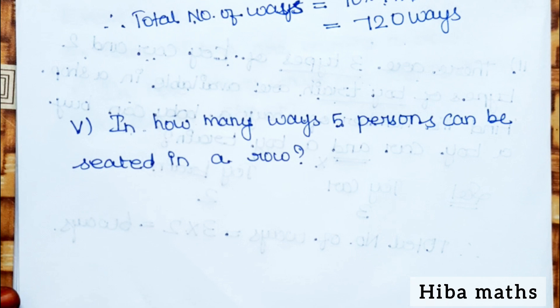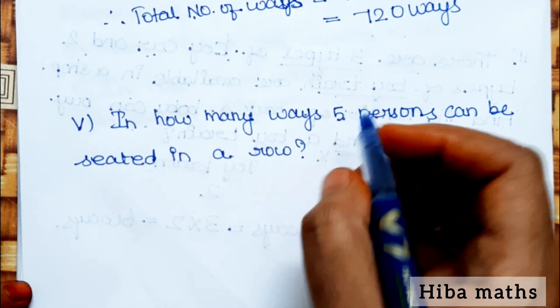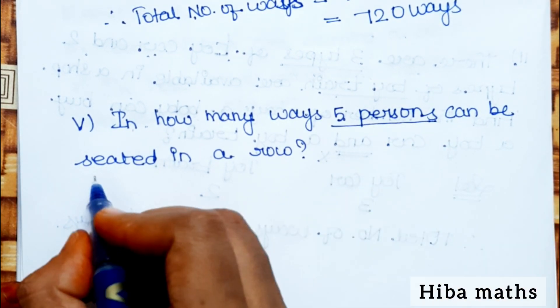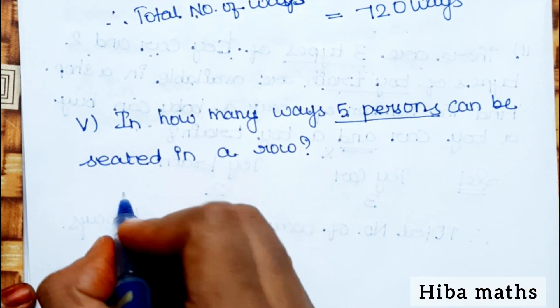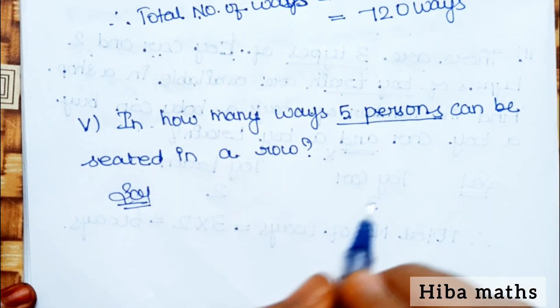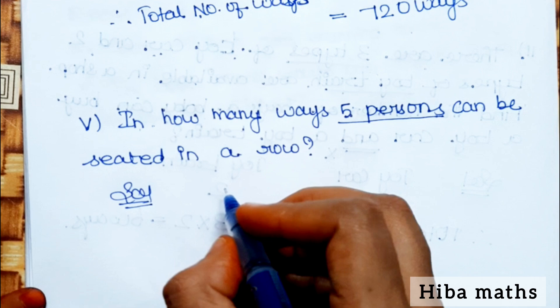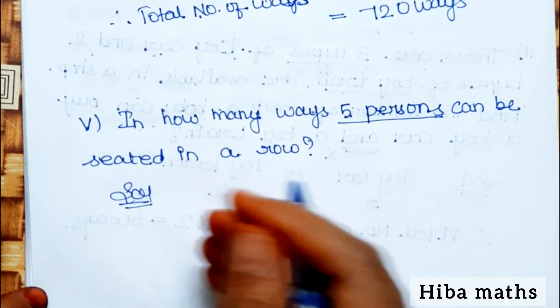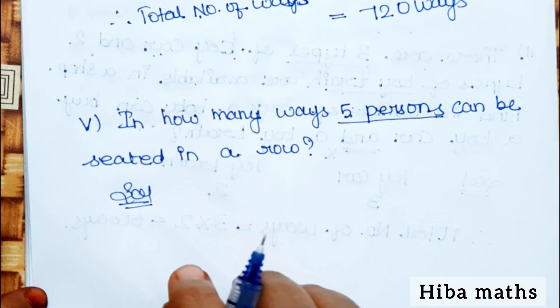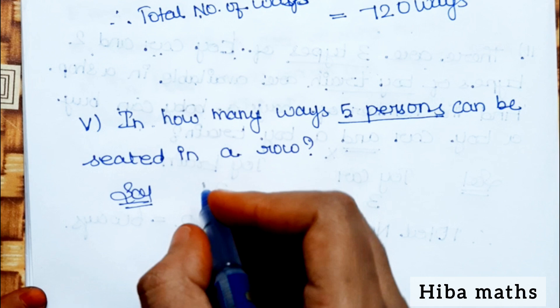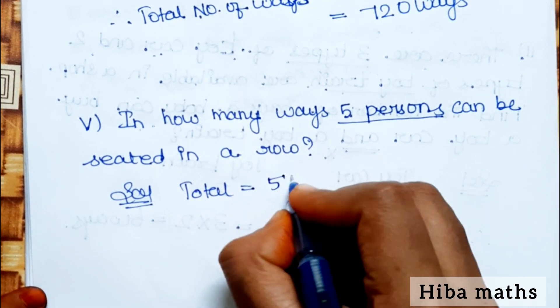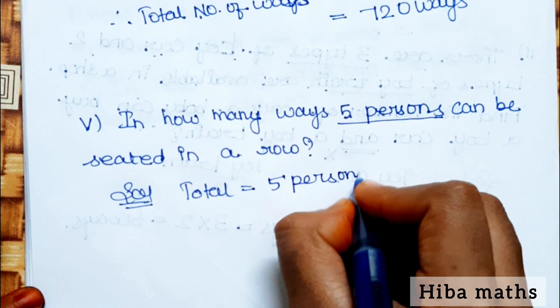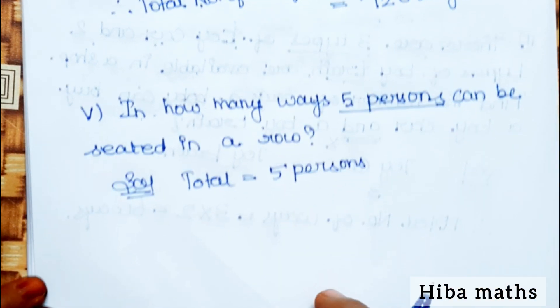Fifth question: In how many ways can 5 persons be seated in a row? There are 5 persons in the question. Total 5 seats are available. First person can use 5 seats, second person can use 4 seats, third person can use 3 seats.